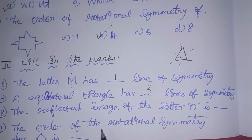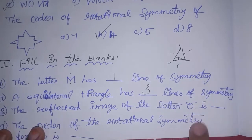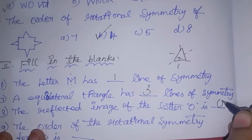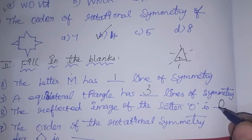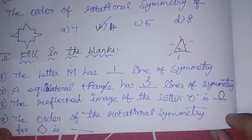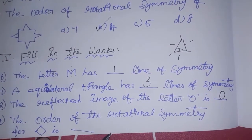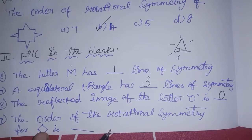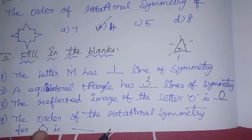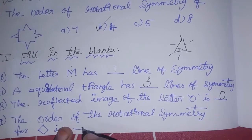Next, the reflected image of the letter O. How does O have a reflection? O is the same — it is a reflection image. Next, the order of rotational symmetry for this diagram is also 4.